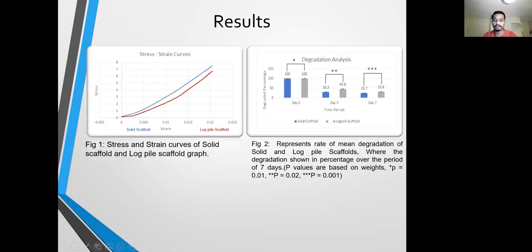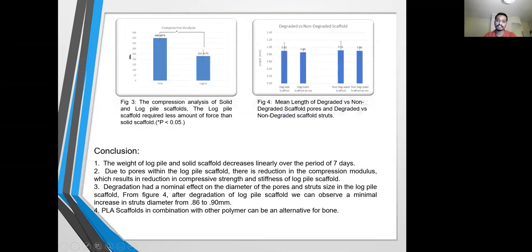Figure 1 shows the stress and strain curve of a solid scaffold and the log-pile scaffold, while Figure 2 represents the mean degradation rate of the solid and log-pile scaffold, where degradation is shown as a percentage over a period of 7 days. Figure 3, the compression analysis of the solid and the log-pile scaffold, shows that the log-pile scaffold requires less force than the solid scaffold.